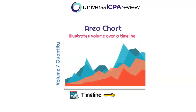The next chart is an area chart, which is very similar to a line chart except it fills in the area below. The benefit of an area chart is it allows us to plot volume or quantity for specific items over a period of time, showing visually how the change in volume and quantity develops. In this example, we see peaks and valleys for each of the different products and how much area they cover. Just remember it has everything filled in below.